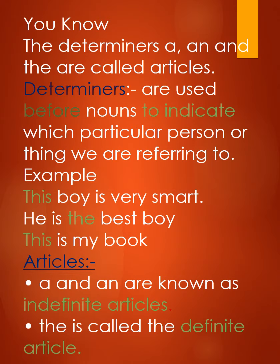Determiners are used before nouns to indicate which particular person or thing we are referring to. Yaani jo determiners hain, woh nouns se pahle use hote hain — yeh indicate karne ke liye ki kis particular person ya thing ko hum refer kar rahe hain. Is definition se clear ho jata hai ki hamesha nouns se pahle jo bhi word aata hai, most probably woh Determiner hoga. Determiners mein pehle aate hain Articles — A, An, aur The.